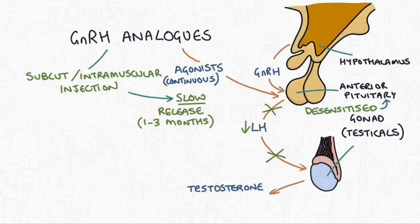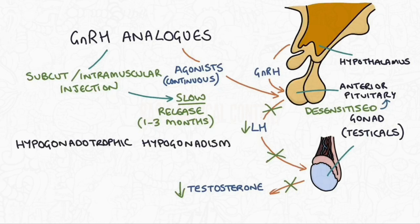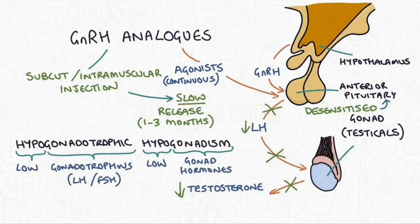This leads to a reduction in the production of estrogen or testosterone and so you get something called a hypogonadotropic hypogonadism. So this is low gonadotropins LH and FSH causing a low output of the hormones from the gonads.